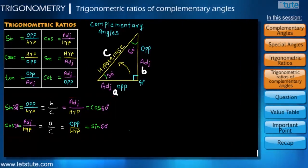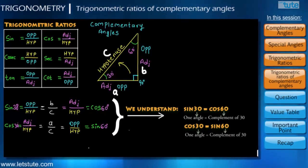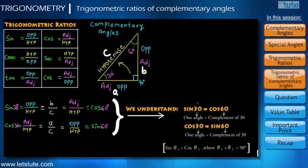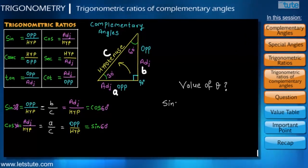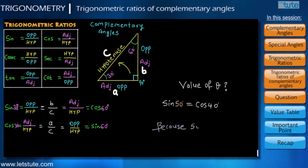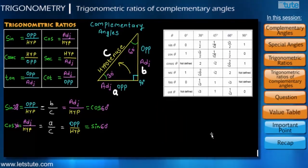What do we understand from this? Sin of one angle is the same as the cosine of its complement, and vice versa. The value of sin will always equal the value of cos for any two angles which add up to 90 degrees. For example: what is the value of theta for which sin theta equals cos 40? It is 50, because 50 plus 40 gives us 90. Therefore sin 50 equals cos 40. As mentioned in our previous session, we have predefined values for the specific angles 0, 30, 45, 60, and 90, which we frequently use in trigonometry.